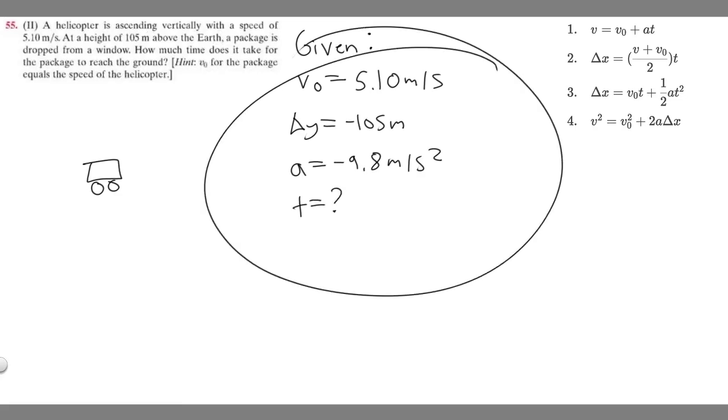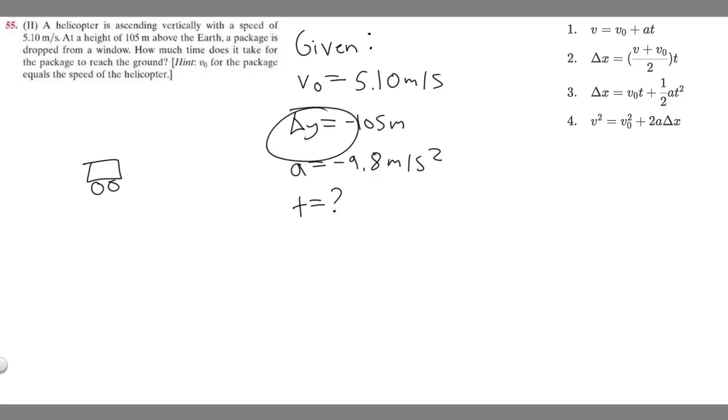Now we've got our givens. Let's decide which formula to use. We know it's going to have delta Y, so the first one doesn't work. We know it's going to have acceleration, so that's not going to work. We're solving for T, and the last one doesn't contain T, so it's not going to be that one. So we're going to be using equation 3. Equation 3 has a delta X in it - just pretend it's delta Y, it works the same way.